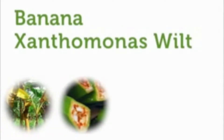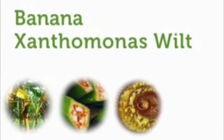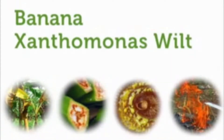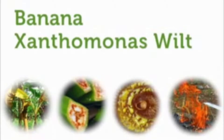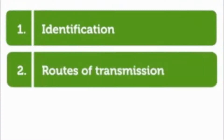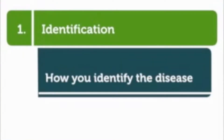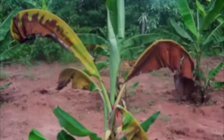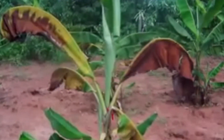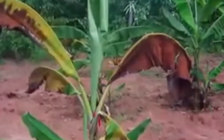This video is about the banana xanthomonas wilt, a bacterial disease which affects all banana cultivars. The disease can cause up to 100% loss once it attacks a plant. The video will cover identification of the disease symptoms, routes of transmission, and prevention and control measures.